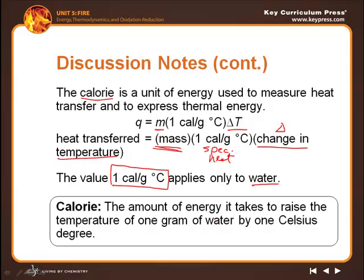The calorie is defined as the amount of energy it takes to raise the temperature of one gram of water by one Celsius degree. You may have heard the word 'calories' when talking about food — this is sometimes referred to as a chemistry calorie, not a food calorie, because it refers specifically to chemical situations. It's a different unit, so be aware of that.